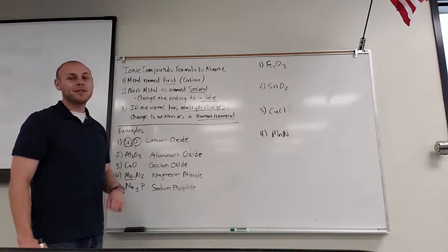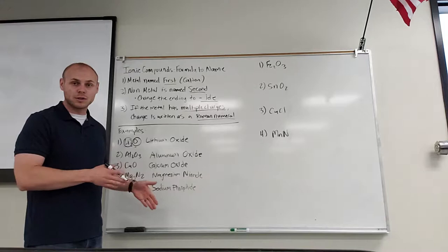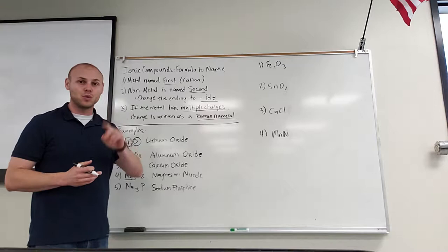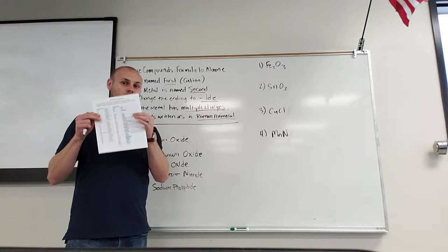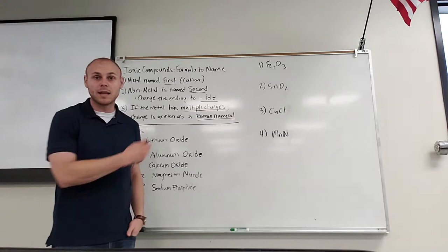However, we have other binary compounds that instead of having a type one metal — a metal in group one or two which has a fixed charge — we now have transition metals, which are considered type two. These type two metals have varying charges as we see on our ion sheet. So how are we going to know the actual charge? We know it can be one of two charges from our ion sheet, but secondly we have to look at the anion and name from there.